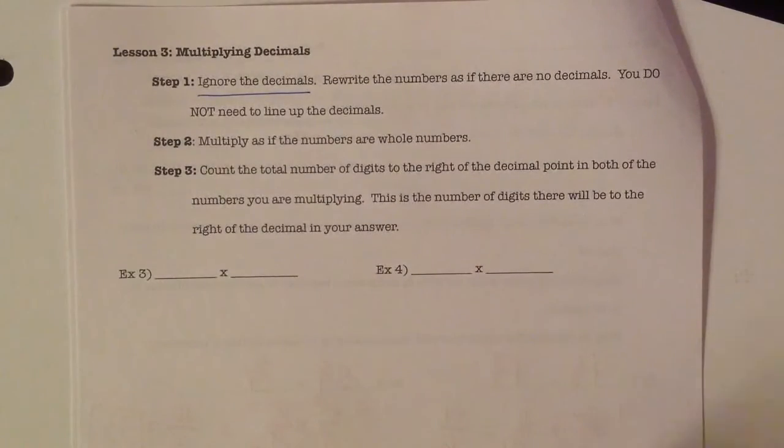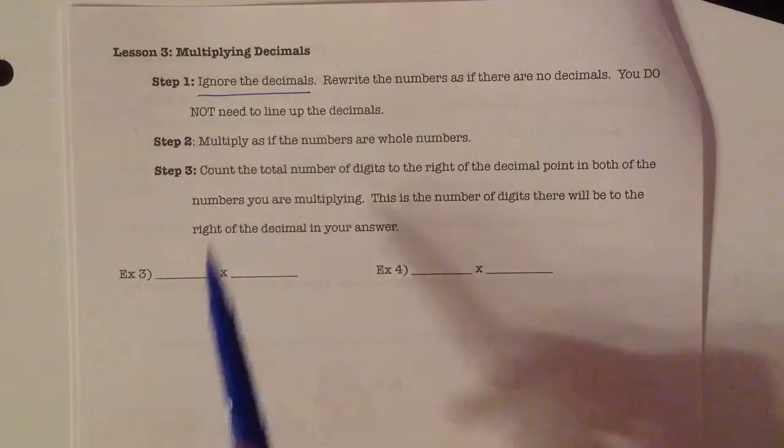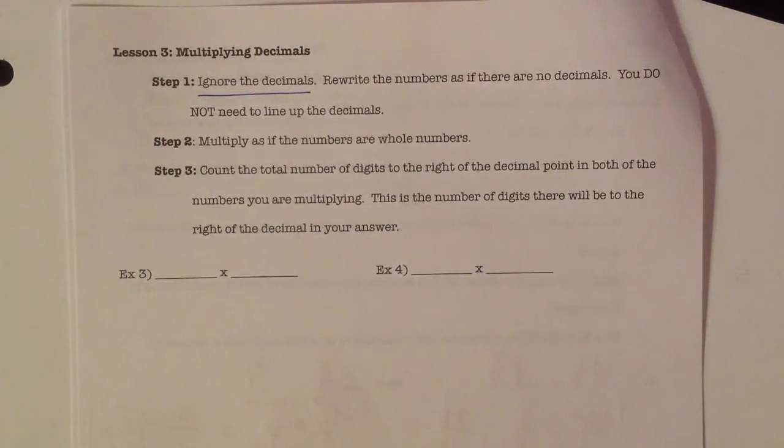Step 2 then, we're just multiplying them as if they are those whole numbers. And then step 3, that's when we factor in those decimals. So we count the total number of digits to the right of the decimal point in both of the numbers that we are multiplying. And that's the number of digits that will be to the right of the decimal in our answer.